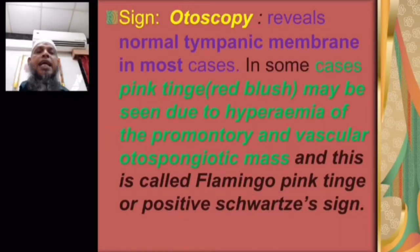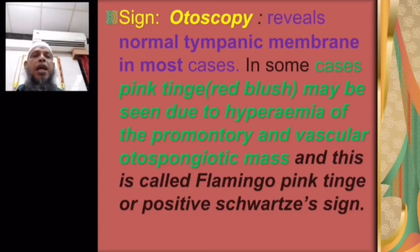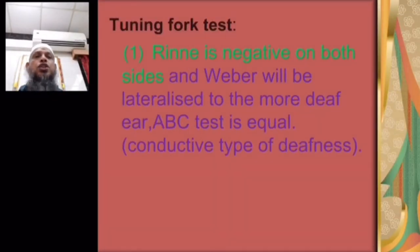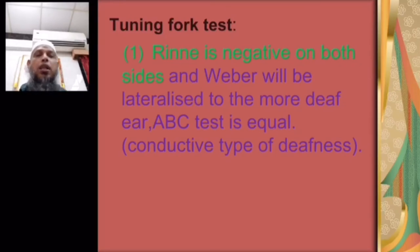Signs — otoscopy: the tympanic membrane is normal in most cases, but in some cases a pink tinge or red blush may be seen due to hyperemia of the promontory and vascular otospongiotic mass; this is called the flamingo-pink tinge or positive Schwartz sign. Tuning fork test: Rinne's test is negative on both sides, Weber is lateralized to the more deaf ear, and absolute bone conduction test is equal — indicating conductive type of deafness.